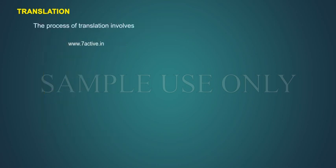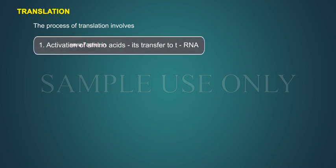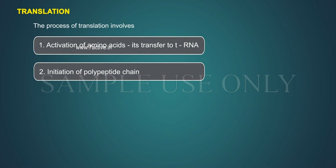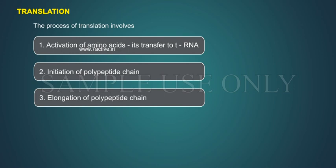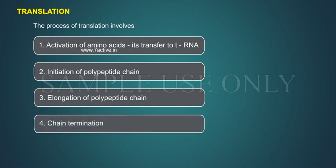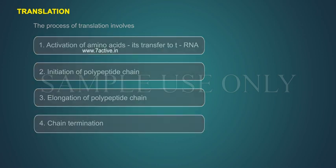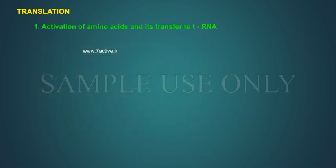The process of translation involves four steps: 1. Activation of amino acids and its transfer to tRNA, 2. Initiation of polypeptide chain, 3. Elongation of polypeptide chain, 4. Chain termination.